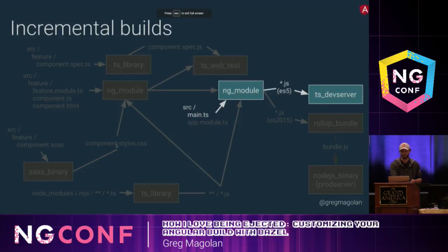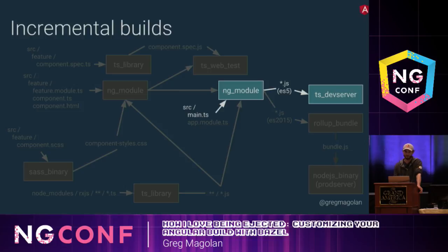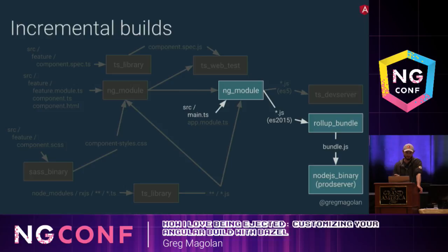The last thing I'd like to talk about before wrapping up is how Bazel does incremental builds. Even for large applications with thousands of source files, a change to your application in Bazel will result in rebuilding only the actions that depend on that change. The rebuild time in Bazel is proportional to the size of the change, not the size of your application. For example, if I modified main.ts and asked Bazel to run the dev server, Bazel would only generate the ES5 outputs of that ng-module rule — it wouldn't even run both actions — and then it would run the dev server. Similarly, if I asked Bazel to run the prod server, Bazel would then generate the ES2015 outputs of that ng-module rule, rebuild the production bundle, and run the production server.